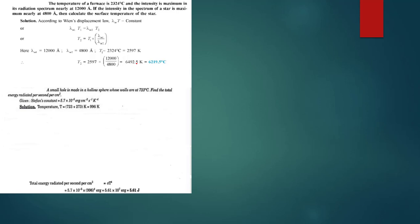We have a question to solve using Stefan's law. A small hole is made in a hollow sphere whose walls are at 723 degrees centigrade. Find the total energy radiated per second per centimeter squared. Stefan's law says power equals area times Stefan's constant times emissivity times T to the power 4.